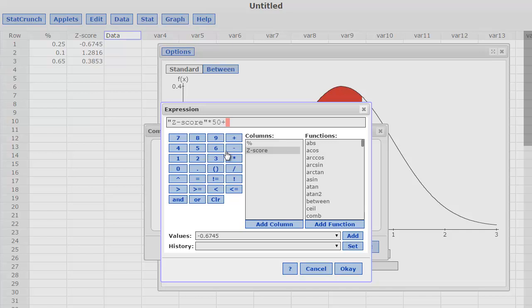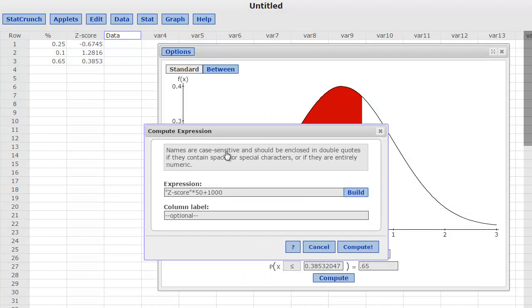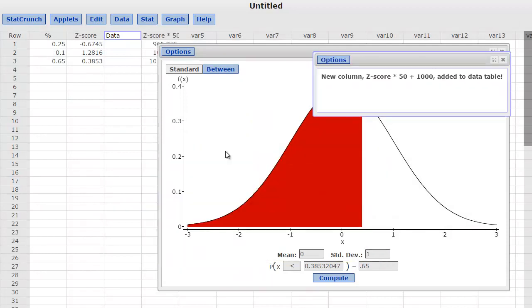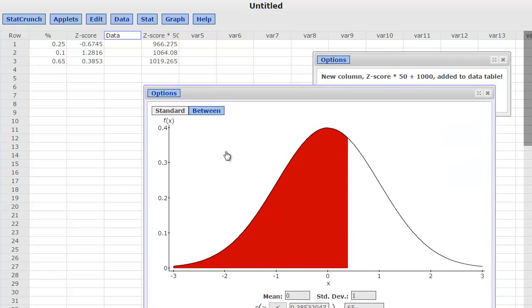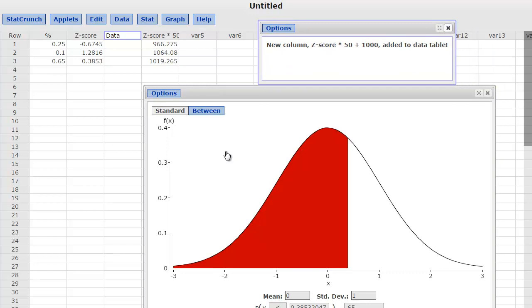Basically, what you need is the z-score multiplied by the standard deviation. So let's say I want the standard deviation to be 50. And then to that, we add the mean. Let's say the mean is 1,000. So here's my mean, here's my standard deviation. I multiply the standard deviation by the z-score, and that gives me the actual data value. And it computes it in a different column. There's the 96, the 1,000, and then the 1,064 and 1,019. And there's my new column.